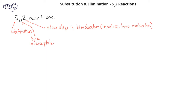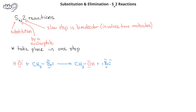SN2 reactions have mechanisms that take place in only one step. A typical example of an SN2 reaction would be methyl bromide reacting with a hydroxide ion. In this reaction, one of the lone pairs of electrons from the oxygen will be donated to the carbon of the methyl bromide. At the same time, the sigma electrons in the carbon-bromine bond will be donated to the bromine leaving group. The products formed in this reaction are methanol and the bromide ion.